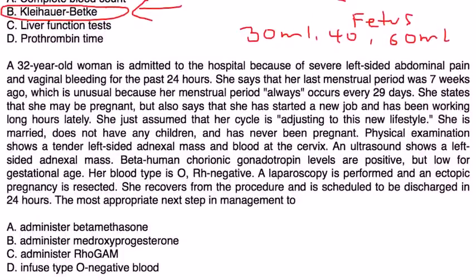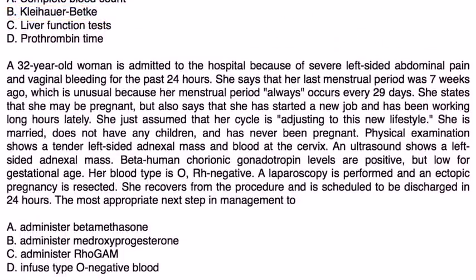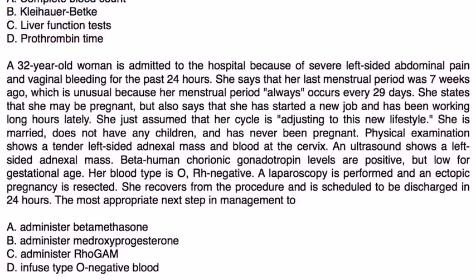Next question. A 32-year-old woman is admitted to the hospital because of severe left-sided abdominal pain and vaginal bleeding for the past 24 hours. She says that her last menstrual period was seven weeks ago, which is unusual. She states that she may be pregnant but also says that she started a new job and has been working long hours lately.